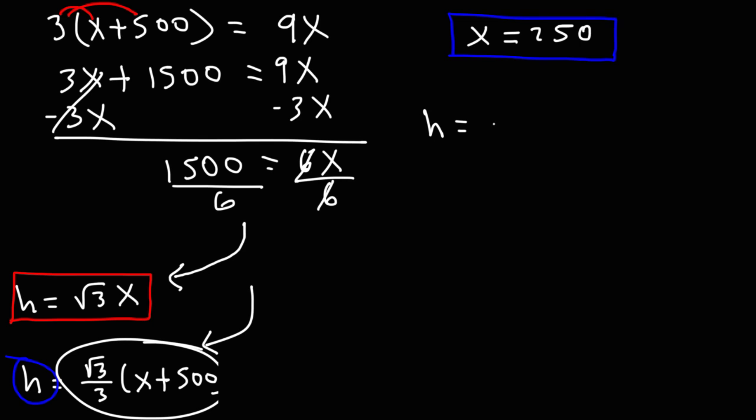So we have h is equal to the square root of 3 times 250. And that is our answer, but it's best to write it this way. h is equal to 250 times the square root of 3.